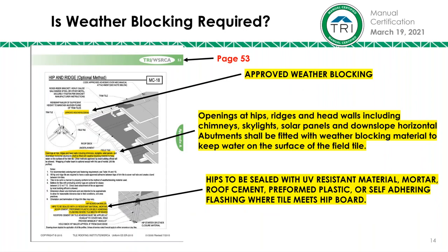The next question is about weather blocking. Is weather blocking required, and what are the considerations? When we look at Europe, where tile for centuries went down with no underlayment, no roof sheathing — what we call open space sheathing — you could go up in the attic and look up and see a one-by-four with tile installed to it. But in Europe, to be a master tiler you have to be an apprentice for 18 years, pass testing, and then you become a craftsman — a master tiler.